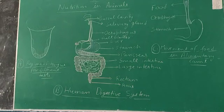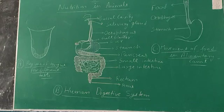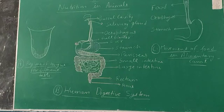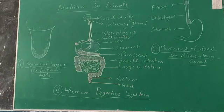This is all about the human digestive system. By studying it, we understand that there are different parts in the digestive system, each having different functions to perform. Different organs combine together to make the organ system, which is why it is called the digestive system. The buccal cavity contains salivary glands.